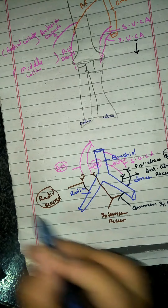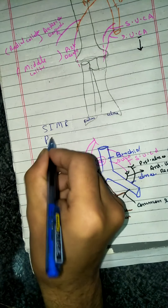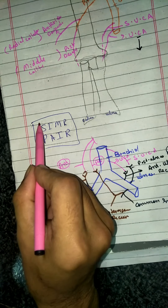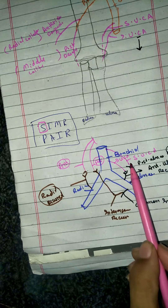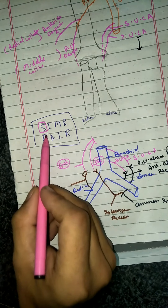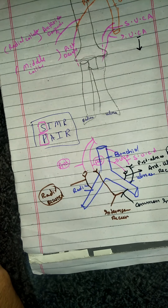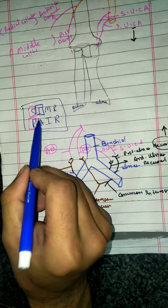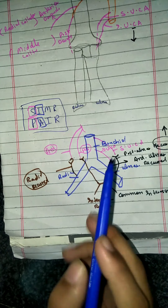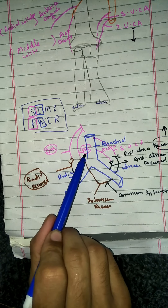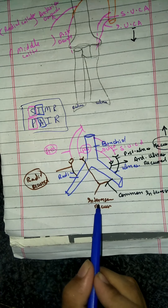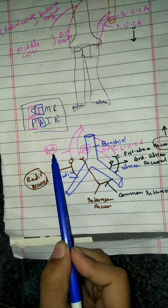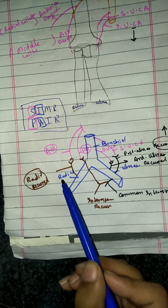We have the mnemonic: SIMMER PAIR. This mnemonic shows us that the Superior ulnar collateral artery anastomoses with the Posterior ulnar recurrent branch. Then I shows us that the Inferior ulnar collateral artery anastomoses with the anterior ulnar recurrent branch. M shows us that the Middle collateral artery anastomoses with the Interosseous recurrent artery. And R shows us that the Radial collateral artery, also known as the anterior descending branch, anastomoses with the radial recurrent artery.